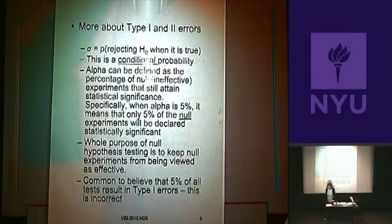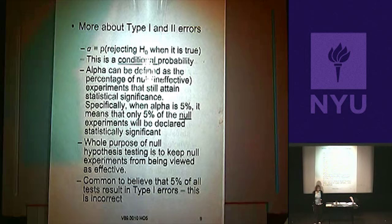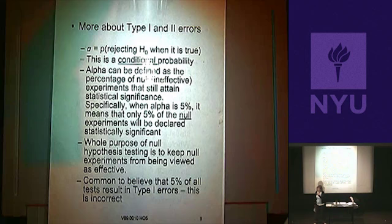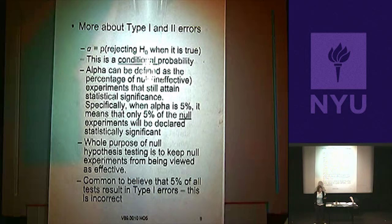Remember, what is a Type 1 error? The probability of making a Type 1 error is alpha. A Type 1 error is when you reject the null hypothesis when it's really true. A Type 2 error is when you fail to reject the null hypothesis when it's really false.